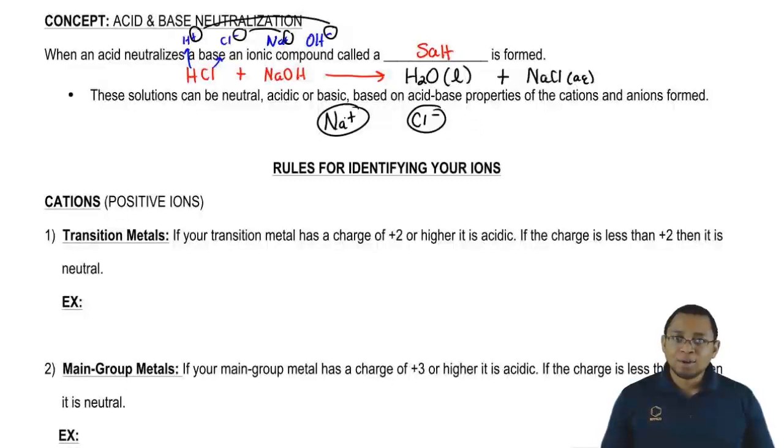So remember, we're going to have to learn that salts are just ionic compounds. They're made up of a positive ion called a cation and a negative ion called an anion. Now, based on certain properties, these ions can be acidic, basic, or neutral. So let's take a look at it.